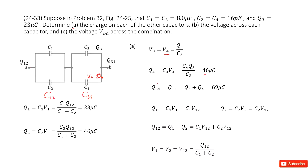For the circuit from A to B, C12 and C34 are in series connection. For series connection, the charge on C12 equals the charge on C34. So Q12 equals Q34, and Q34 must equal Q3 plus Q4. We input Q3 and Q4 to get the charge for C12.